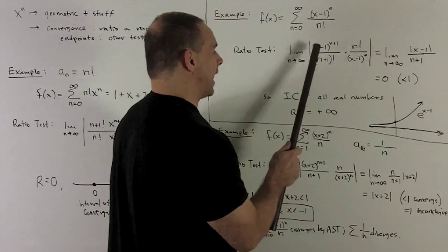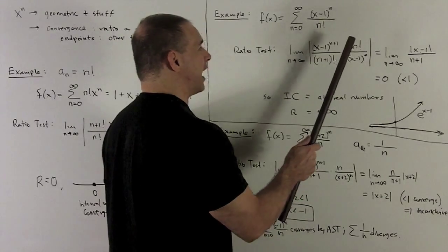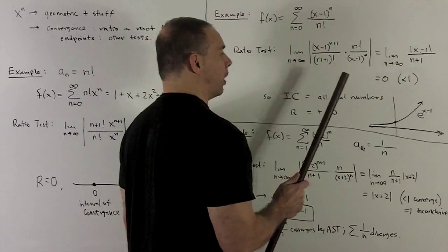We take a look. The (x-1) terms are going to cancel entirely except for one up on top. And then n factorial over (n+1) factorial. That's going to leave me with an n plus one in the bottom.